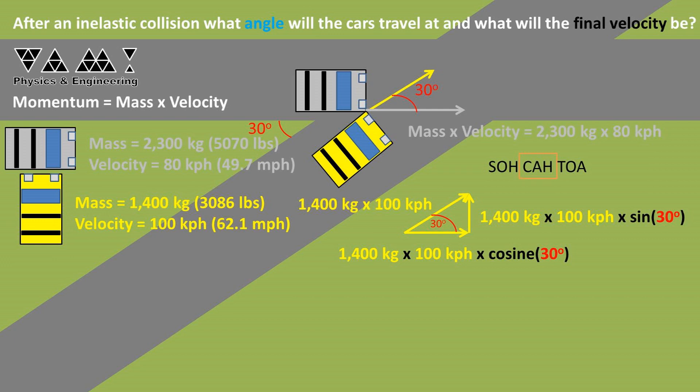We can do the same thing for the other leg, but instead of the sine, we use the cosine portion of SOHCAHTOA. We get that the momentum of the yellow car times the cosine of 30 degrees equals the momentum in the x direction, or left to right direction.